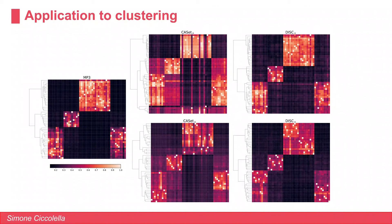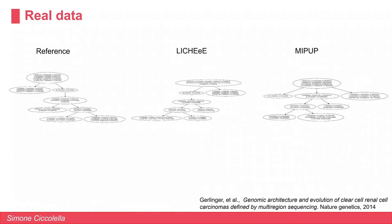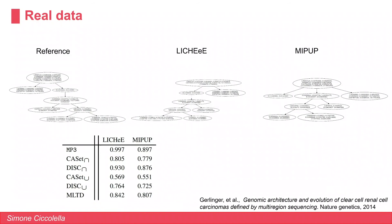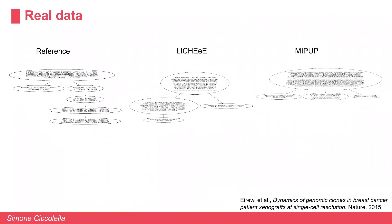Now for the most interesting part: application on real data. We have three phylogenies of renal cell carcinoma — the reference provided by the sequencing paper, and trees inferred by LICHEE and MP3, two well-known cancer progression inference tools from bulk sequencing data. We can see that all measures tend to agree — with the possible exception of CASETTE-union — that these three trees are actually fairly similar.